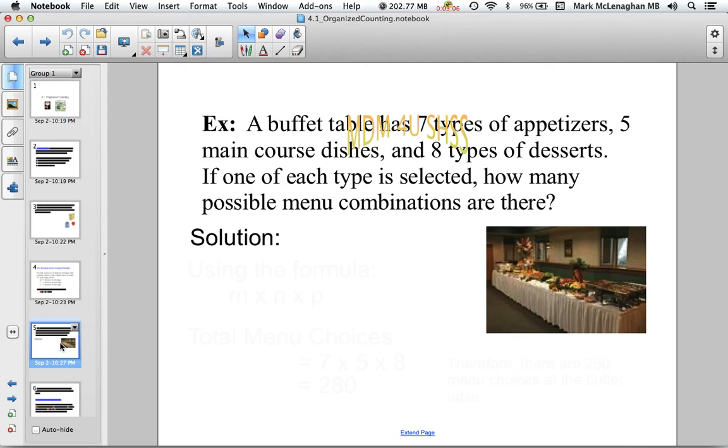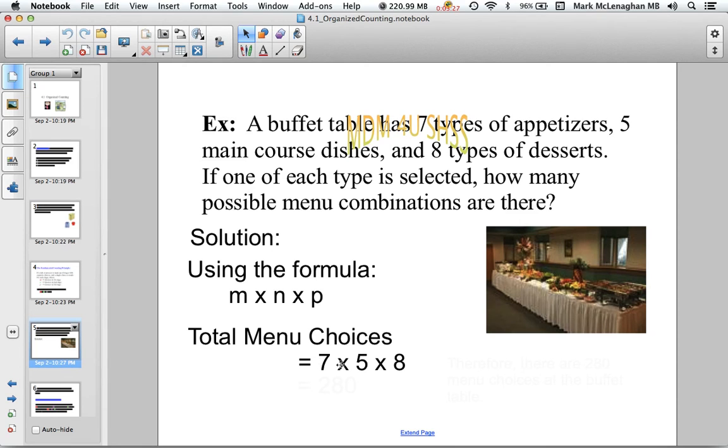Another example is if we go to the buffet and we can choose one appetizer, one main course, and one of eight dishes. How many different menus or combinations can we have? We can use our fundamental counting principle: M × N × P. In this case, M is 7, N is 5, and P is 8, for a total of 280 choices. Therefore we have 280 choices for our menu on the buffet table.